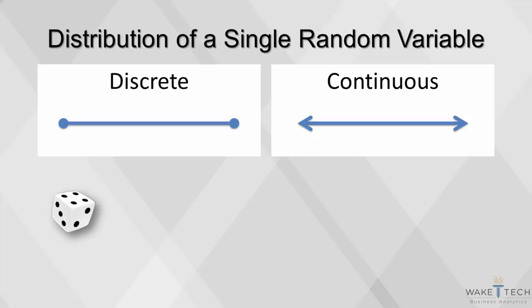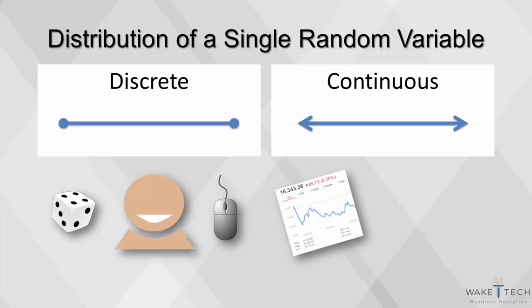Here are some examples of discrete variables: outcomes of dice rolls, whether a customer likes or dislikes a product, or the number of hits on a website. Some examples of continuous variables include the weekly change in the Dow Jones Industrial Average, daily temperature, or the time between machine failures.